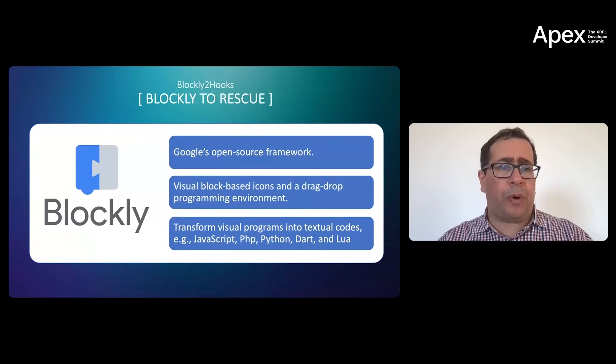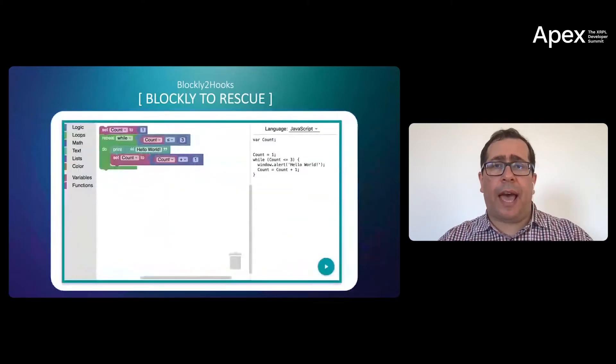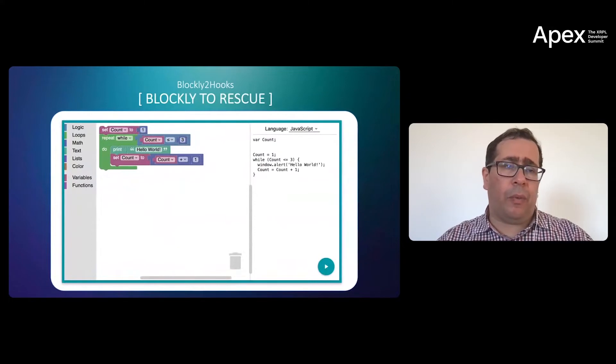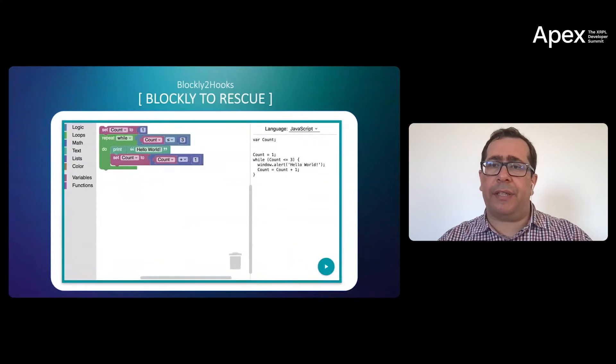Blockly transforms visual programming blocks into textual codes: JavaScript, PHP, and many other programming languages. This is how the original version of Blockly looks like, where we have a menu for all the blocks. In the middle, we structure our codes, and then it automatically transfers it to the required programming language.